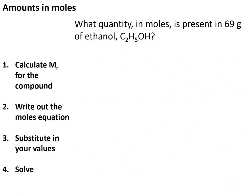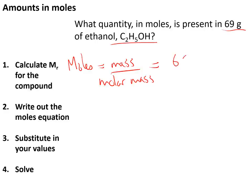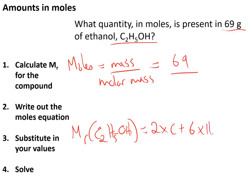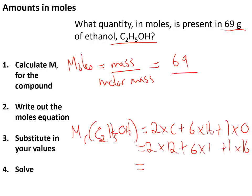To find the quantity in moles of a chemical compound, use the equation: moles = mass ÷ molar mass. For 69 g of ethanol (C2H5OH): the MR is (2×12) + (6×1) + (1×16) = 46, so the molar mass is 46 g/mol. Therefore moles = 69 ÷ 46 = 1.5 mol.